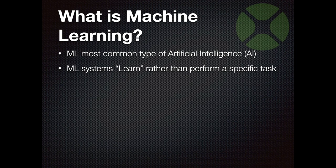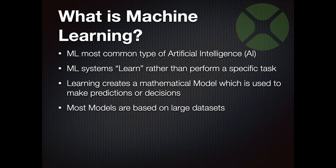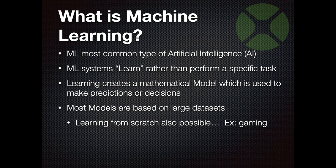The learning process creates a mathematical model - which is actually a file - that you then use to make future predictions or decisions. Most of the models out there are based on massive databases, although there are some exceptions. Learning from scratch is possible without a big historical database; gaming is the best example of this.